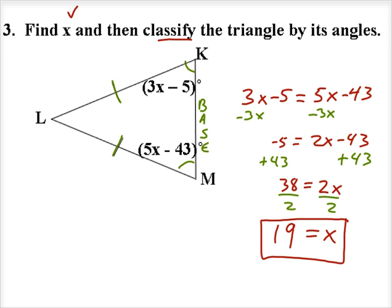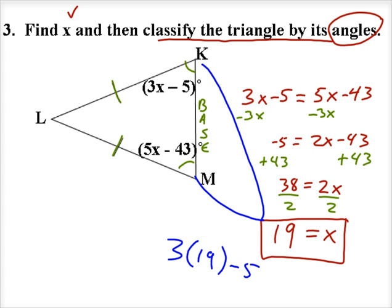and now we need to classify the triangle by its angles. So it's either acute, right, or obtuse. Let's take this value of x and substitute back into angles K and angle M. So we need 3 times 19 minus 5.